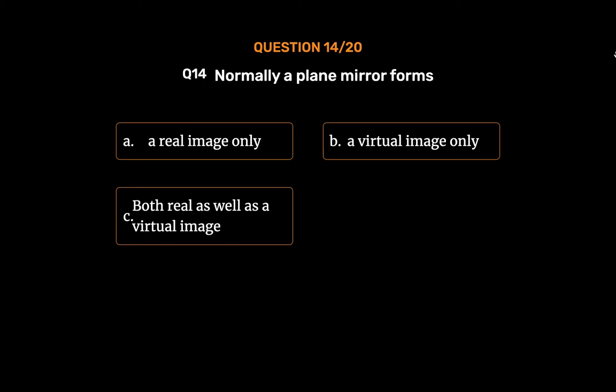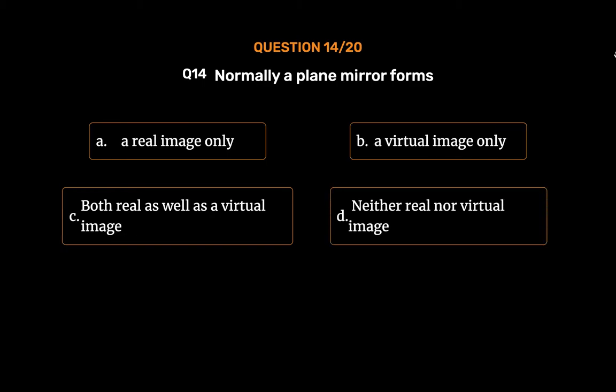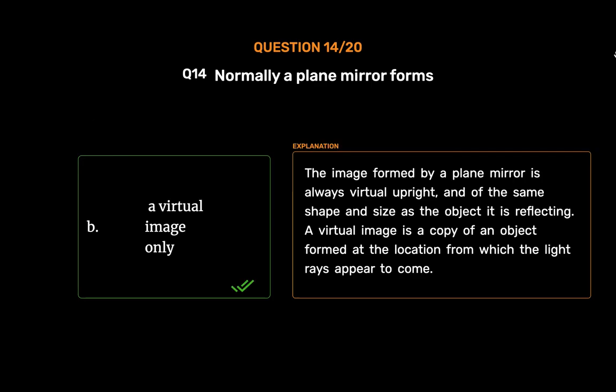Question No. 14: Normally a plane mirror forms — Option A: A real image only, Option B: A virtual image only, Option C: Both real as well as a virtual image, Option D: Neither real nor virtual image. The correct answer is Option B: A virtual image only. The image formed by a plane mirror is always virtual, upright, and of the same shape and size as the object. A virtual image is a copy of an object formed at the location from which the light rays appear to come.